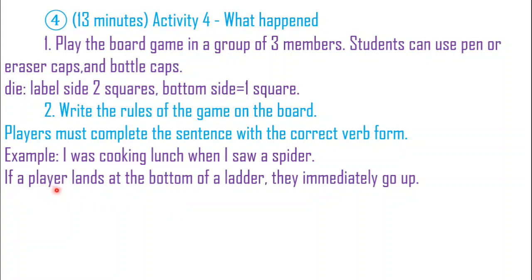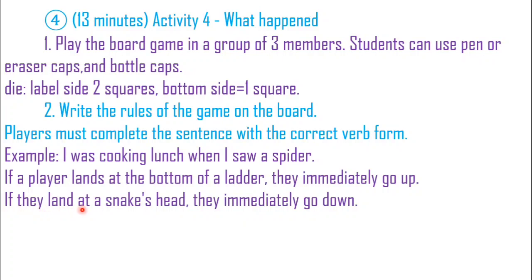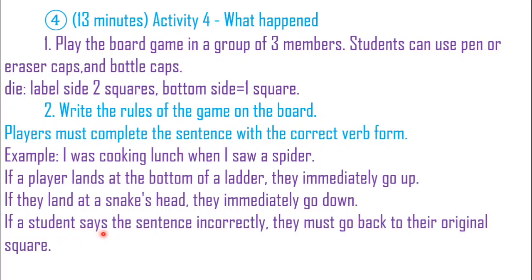If a player lands at the bottom of a ladder, they immediately go up. If a player lands at a snake's head, they immediately go down. If a student says the sentence incorrectly, they must go back to the original square.